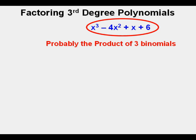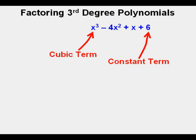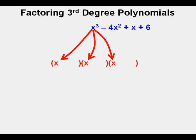We get our major clues of where to start from the cubic term, which is x cubed, on the left, and the constant term, which is 6, on the right. This tells us that the first term of each of the binomials will probably be x, since x times x times x is x to the third power, or x cubed.